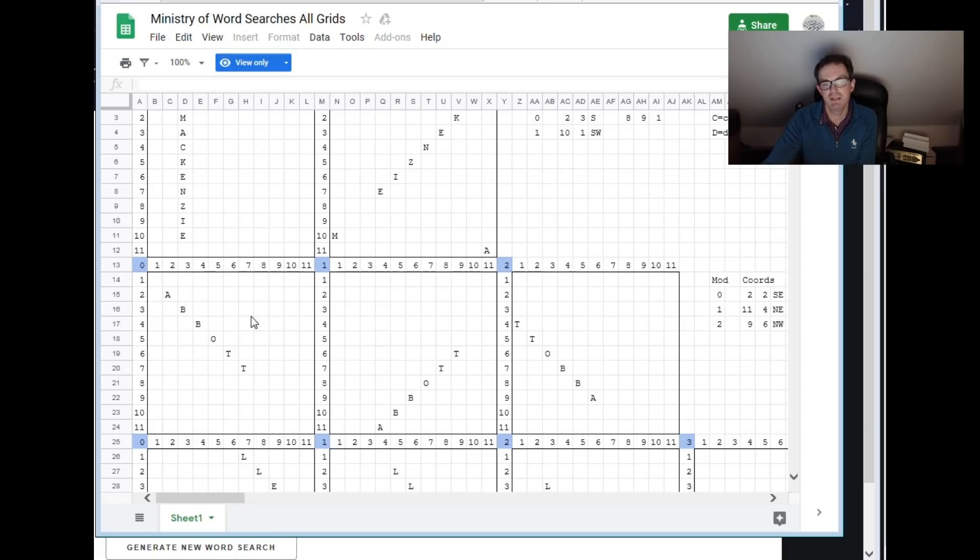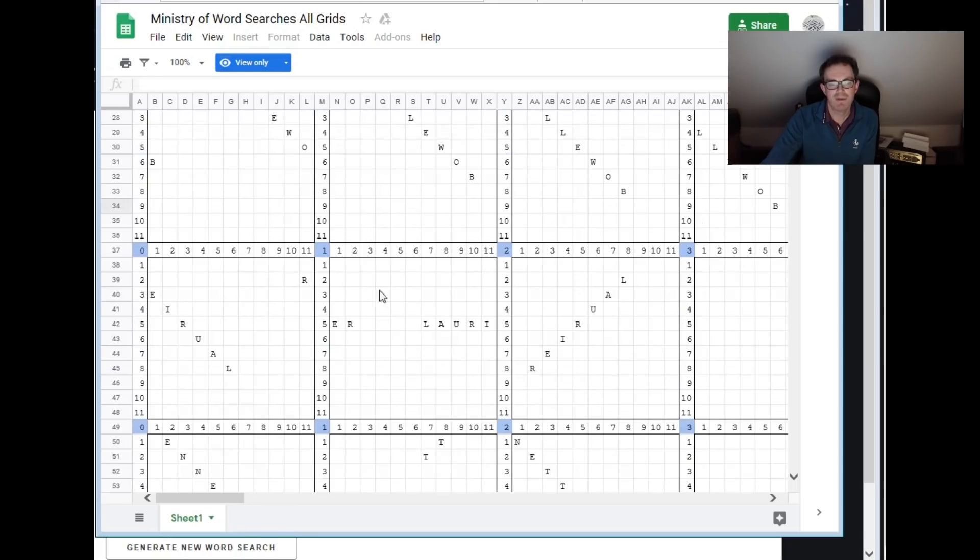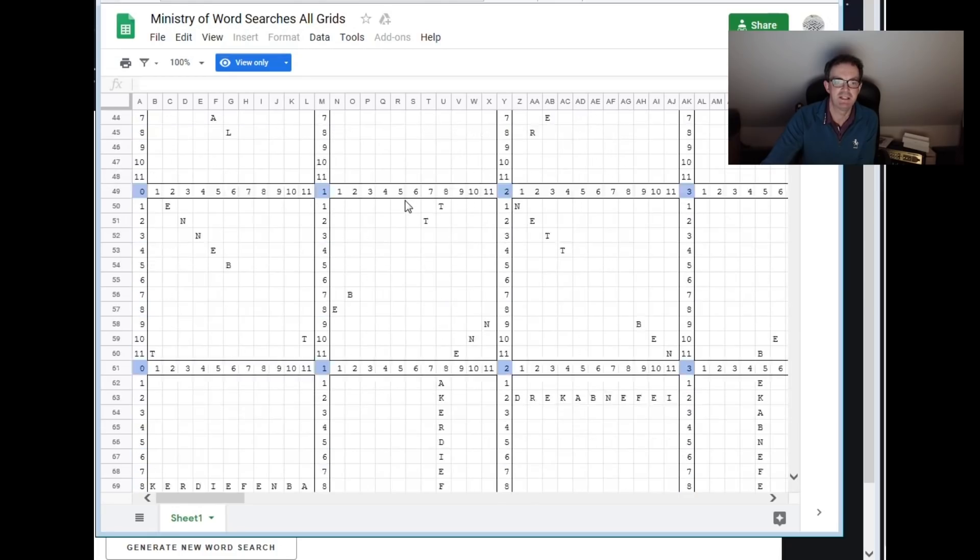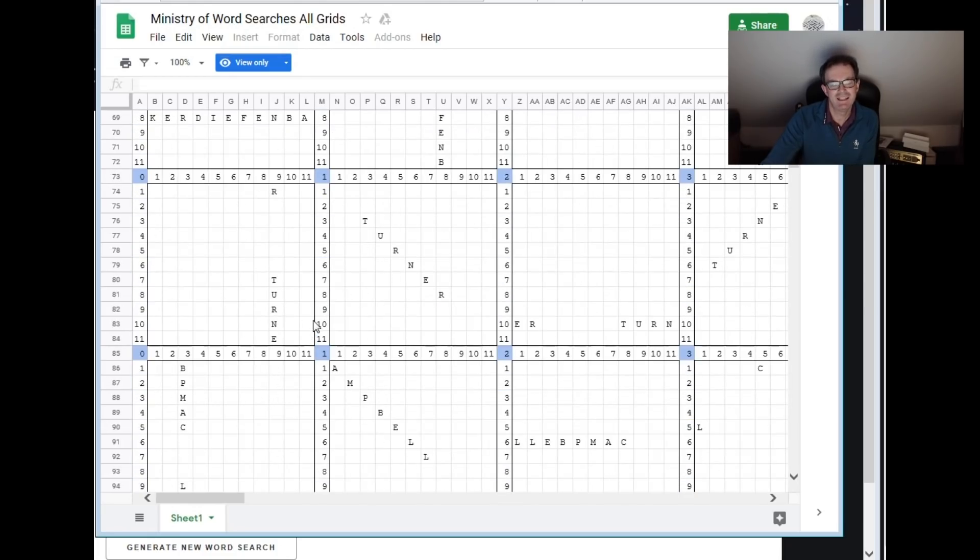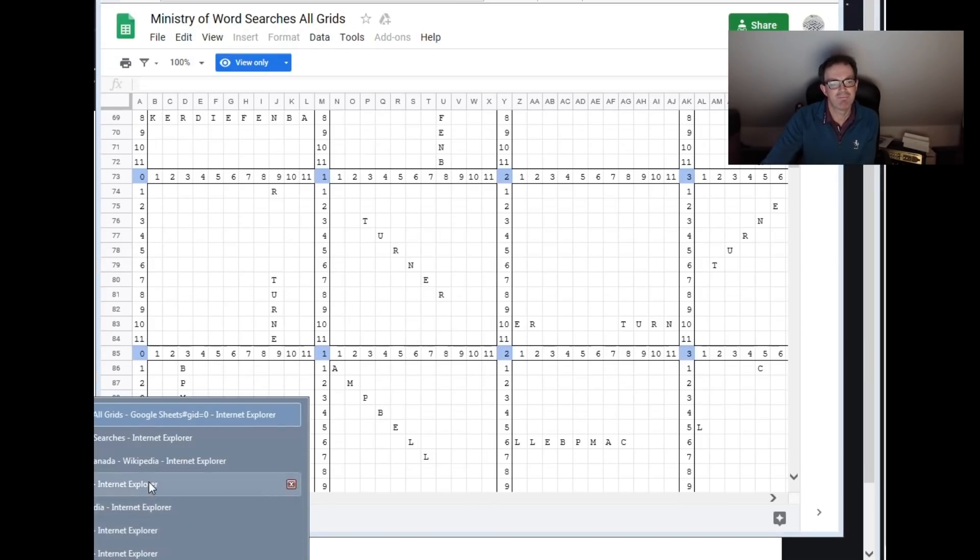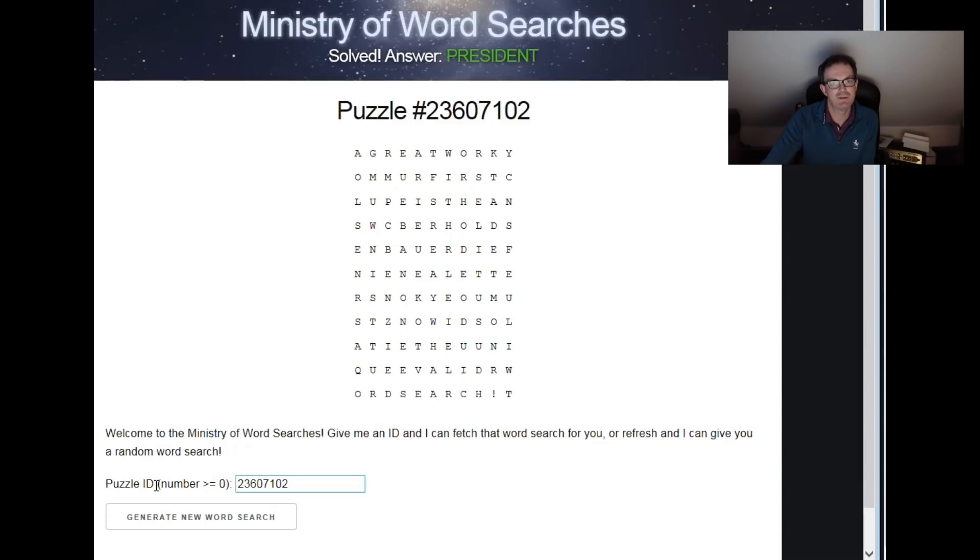So it turned out that depending on the number of the word search that you typed in and the remainder when that number was divided by the number of the prime minister, these prime ministers flicked positions. So in fact, each word search corresponded to a very precise arrangement of these Canadian prime ministers. And that, in and of itself, was daunting and strange. The next thing that we noticed is that hidden amongst the Canadian prime ministers, there seemed to be a message.